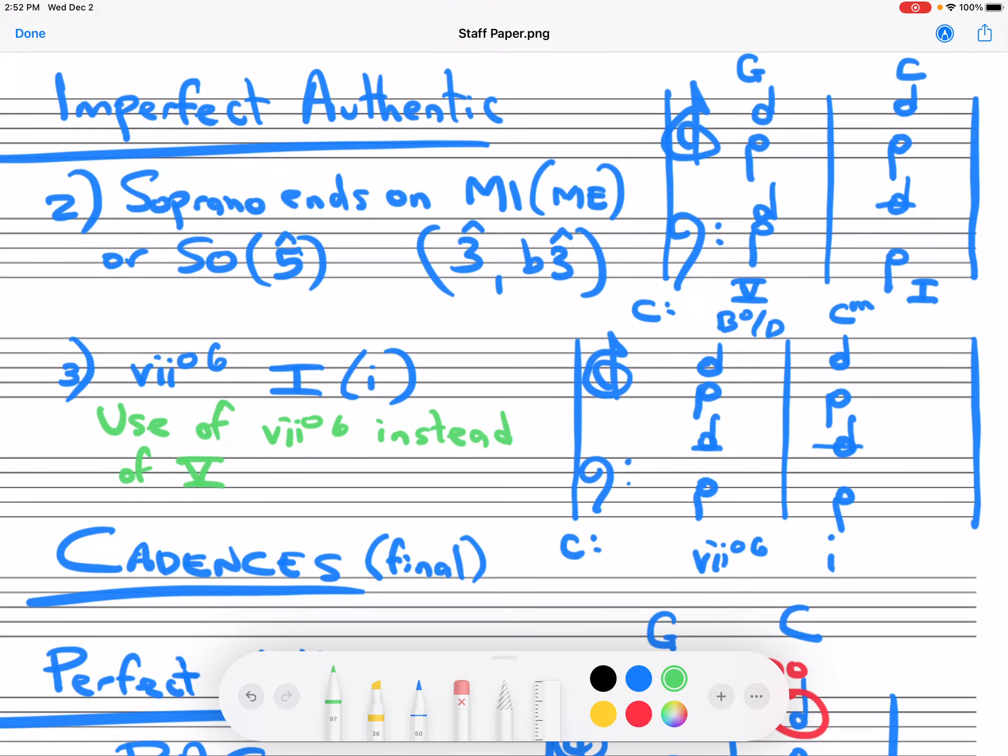Another type is if the soprano does not end on Do. So here, I give you an example where the soprano ends on Mi. It could also end on So. And notice the bass still is in root position, but it doesn't quite sound as final because the soprano, instead of going down, it goes up.